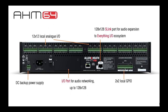On the back panel you'll find 12x12 local analog I/O on Phoenix connectors, and the S-Link port for audio expansion of up to 128 inputs and outputs through our Everything I/O range of modular portable or wall-mount audio expanders. Some of you may already be familiar with the S-Link port from our Avantis or SQ digital mixers. It's an intelligent port that will automatically detect what's on the other side of the cable and switch to the appropriate Allen & Heath protocol, operating at 48 kHz or 96 kHz at different channel counts.